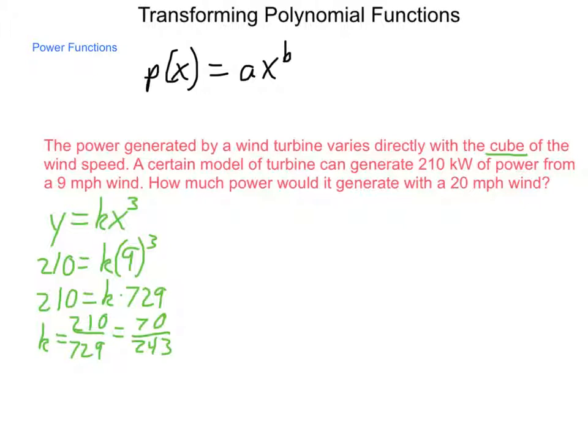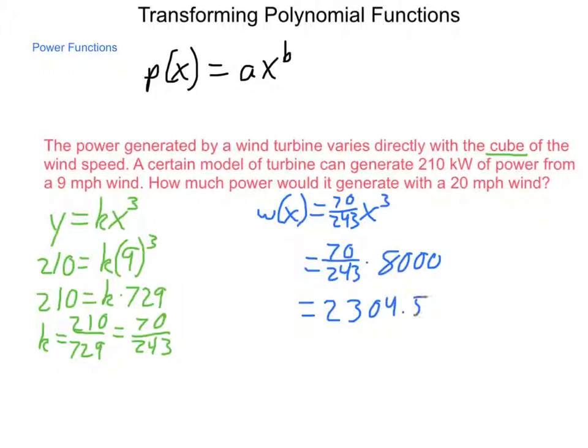Now, we can use that in a more general formula in order to find the value for a 20 mile an hour wind. For instance, we'll say the wind power, w of x, is equal to our fraction, 70 out of 243 x cubed. Now, substituting in 20 miles an hour, 20 cubed is 8,000, so we have 70 out of 243 times 8,000, and that gives us a wind speed, or sorry, a power generation of roughly 2,304 and a half kilowatts.